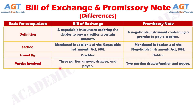Number four: A Bill of Exchange involves three parties — the drawer, the drawee, and the payee — whereas a Promissory Note involves two parties: the maker and the payee.